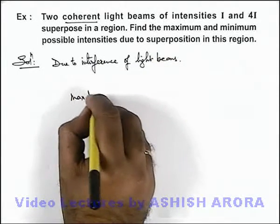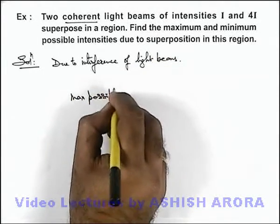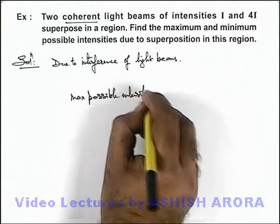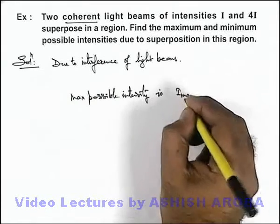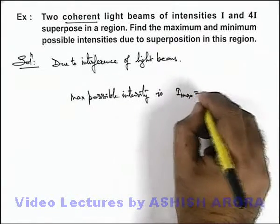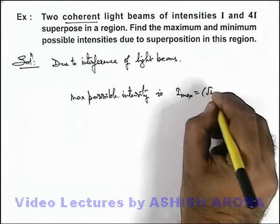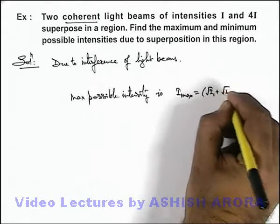Maximum possible intensity: we know that maximum intensity occurs at the point of constructive interference, which is given as (√I₁ + √I₂)².